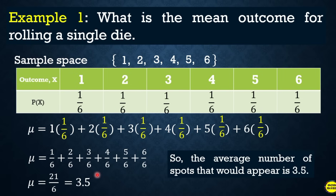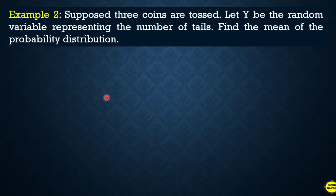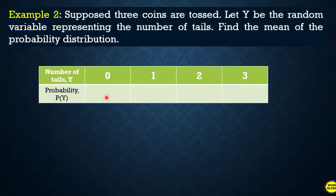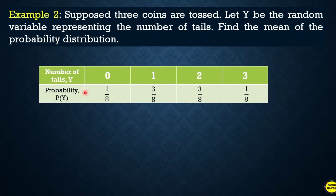It's easy to compute as long as you know your probability distribution. Sometimes the probability distribution is not given and you have to construct it yourself. Another example: suppose three coins are tossed. Let y be the random variable representing the number of tails. Find the mean of the probability distribution. The possible values of the random variable y are zero, one, two, and three, with probabilities one-eighth, three-eighths, three-eighths, and one-eighth respectively.